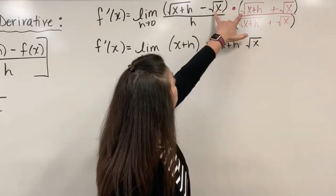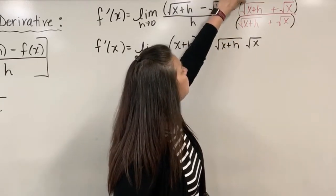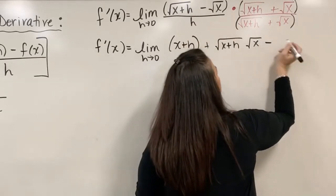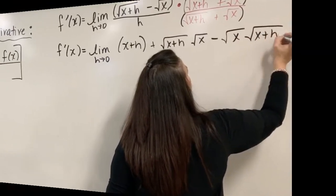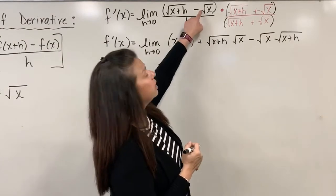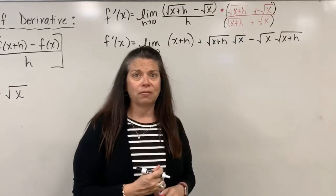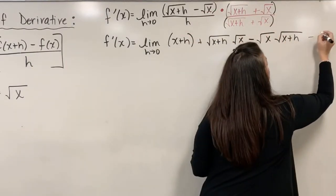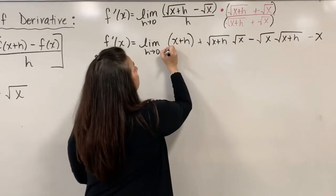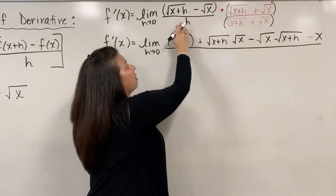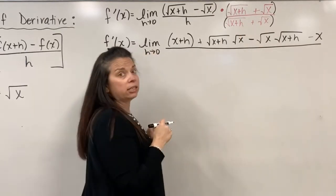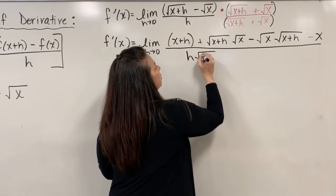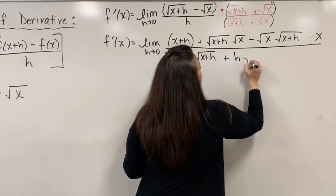Continuing on with the FOIL, I need to do the same process with the square root of x multiplied by square root of x plus h. But I have to subtract them because there's a negative in front of that square root of x. So I subtract off square root of x multiplied by square root of x plus h. And finishing the last piece of the FOIL: negative square root of x times positive square root of x — the square roots cancel and what's left is just x, but I need to subtract it.